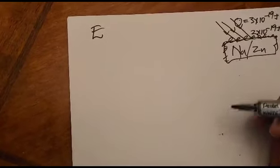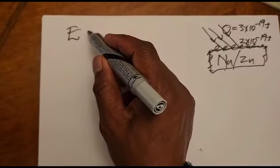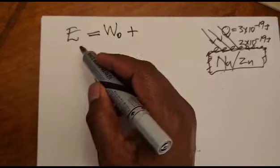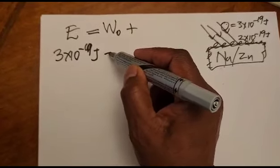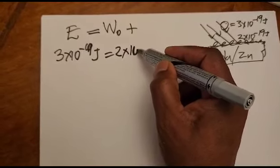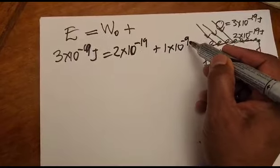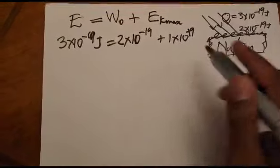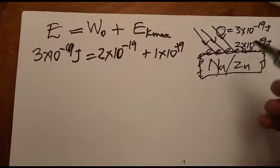By the principle of conservation of energy, energy can neither be destroyed nor created, but it can change from one form to another. The electron absorbs 2×10⁻¹⁹ joules as the work function, and the remaining 1×10⁻¹⁹ joules is converted into kinetic energy — enabling the electron to move.